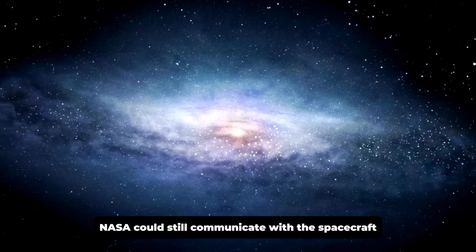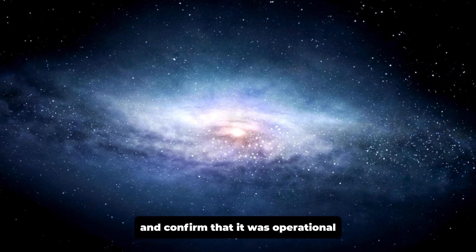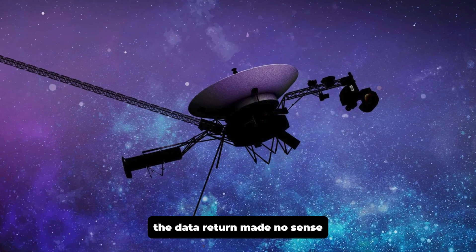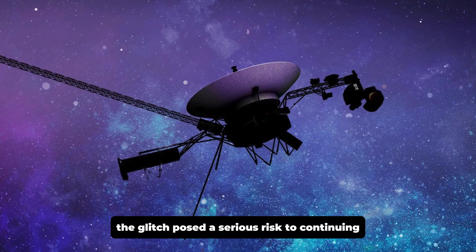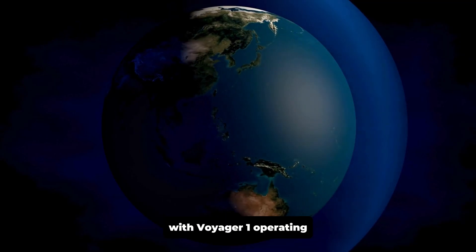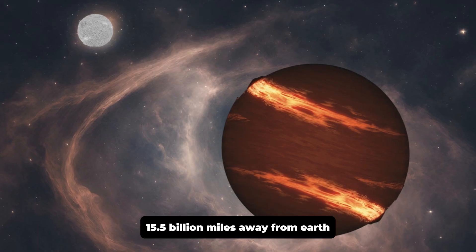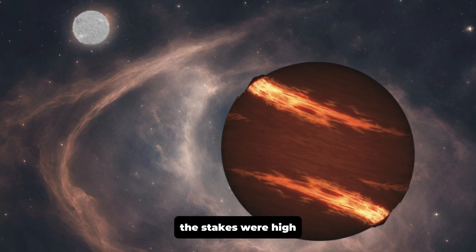Although NASA could still communicate with the spacecraft and confirm that it was operational, the data it returned made no sense. The glitch posed a serious risk to continuing the mission, and with Voyager 1 operating 15.5 billion miles away from Earth, the stakes were high.